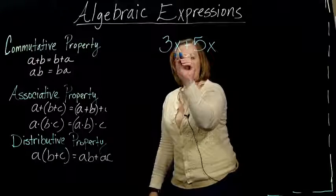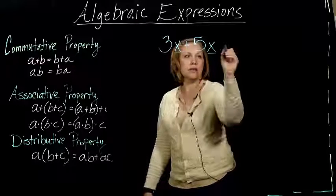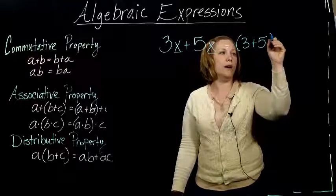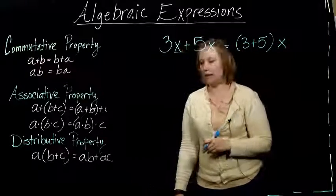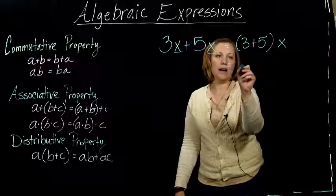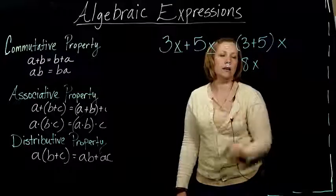I see I've got an x in both of these, so according to that distributive property, this is the same thing as 3 plus 5 times x. It follows that same rule, which now is 8x.